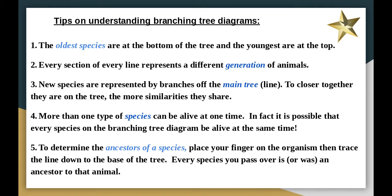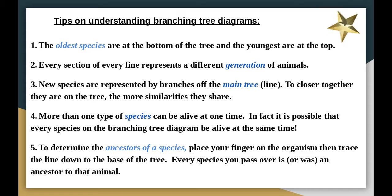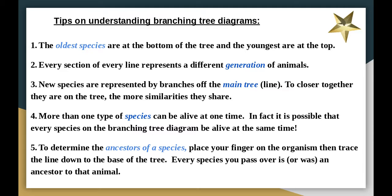When reading a branching tree diagram, understand that the oldest species are at the bottom and the youngest are at the top — just like a family tree where grandparents and great-grandparents are at the bottom and you are at the top. Each line represents a different generation of animals. If a new species occurs, it branches off the main line — such as the tuatara, which is related to lizards and reptiles but branched off into its own species.